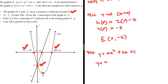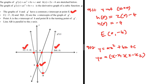We use the general form Y = A(x − x₁)(x − x₂), where x₁ and x₂ are the X-intercepts. The X-coordinate at C is −2 and the other X-intercept is 6. So Y = A(x + 2)(x − 6).